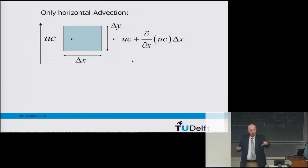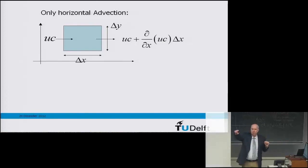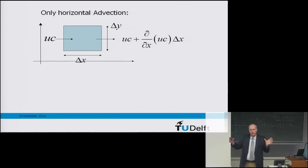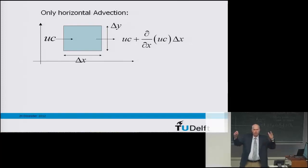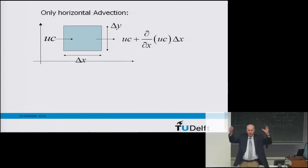To illustrate with an analogy: if the number of people entering through one door in this room is equal to the number leaving through another door, there's a lot of transport but the total number of people stays the same. If there's a gradient — more entering than leaving — then the number of people is increasing or decreasing. That's the control volume concept.